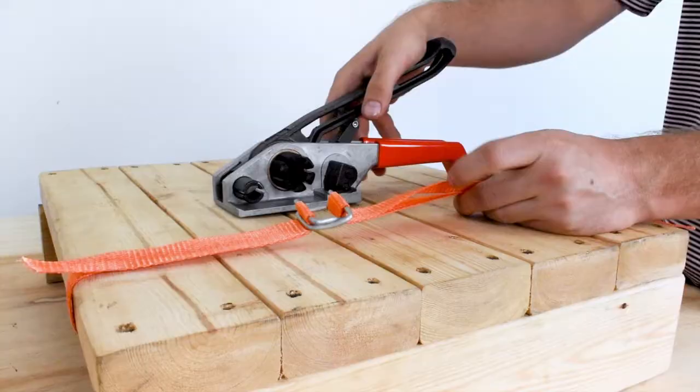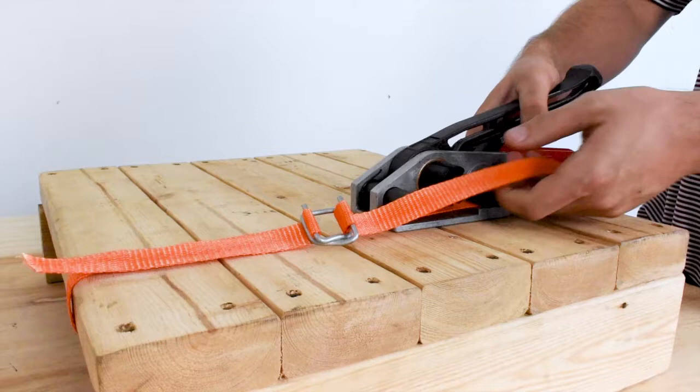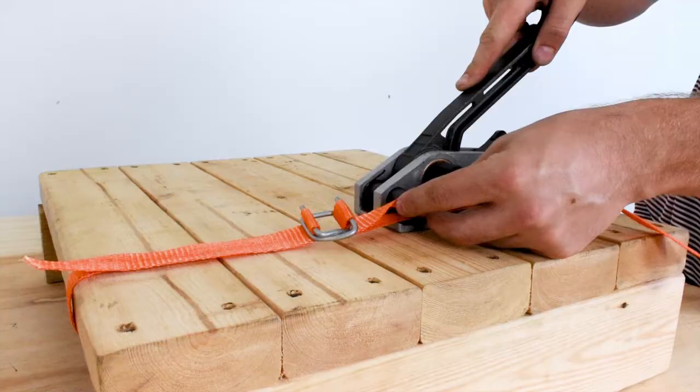Then you're going to pull a little bit of the tension out, take your 1160 style tensioner tool, squeeze the handle to raise the gripper foot. That bottom strap is going to go underneath the gripper foot, and then the top strap is going to go through the cutter housing here.